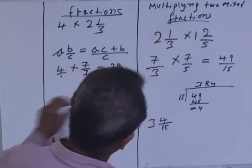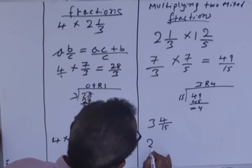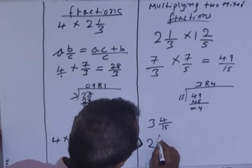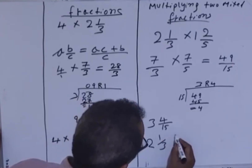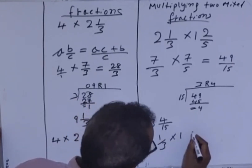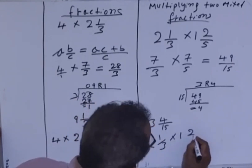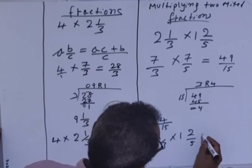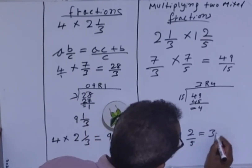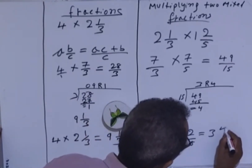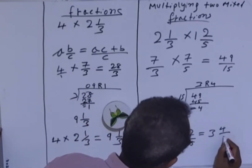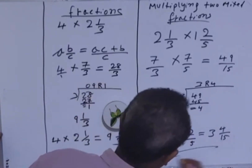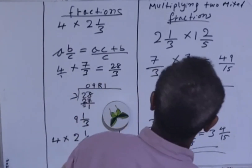So, bringing it all together: 2 and 1 over 3 times 1 and 2 over 5 equals 3 and 4 over 15. And this is the final result.